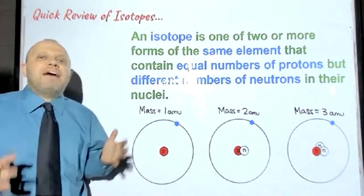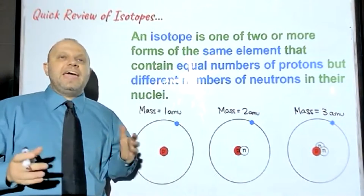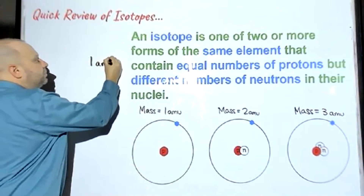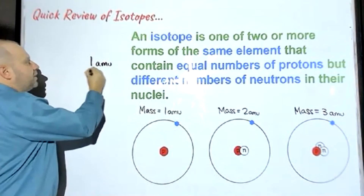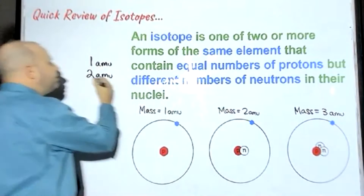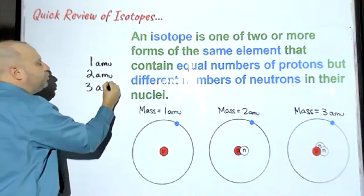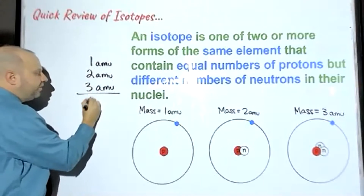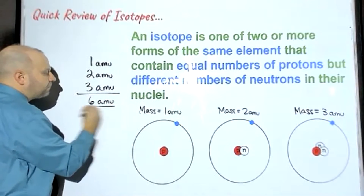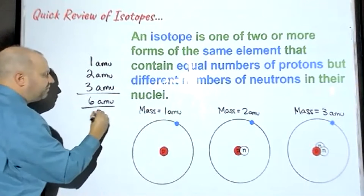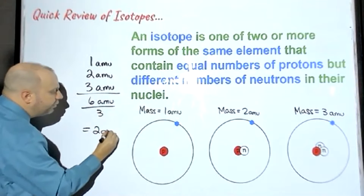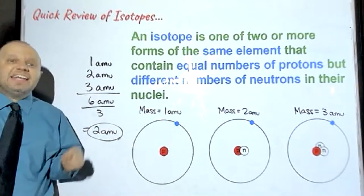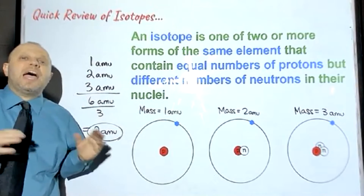We learned how to do averages back in elementary school. We have 1 AMU for the first isotope, 2 AMU for the second, and 3 AMU for the last one. So 3 plus 2 is 5, plus 1 is 6. Divided by 3, we get an answer of 2 AMU. That is a traditional or regular average.